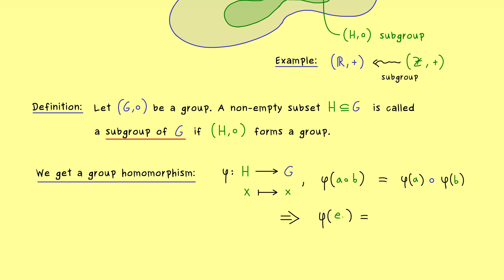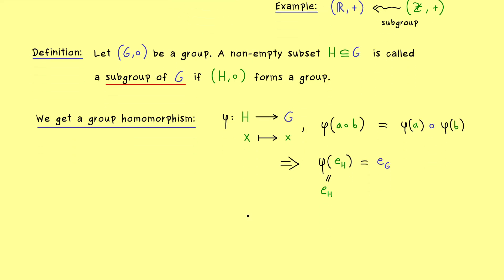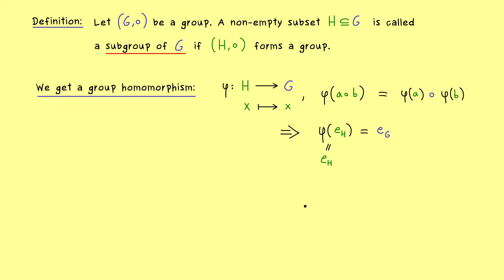Using general properties of group homomorphisms from the last video, we know the identity element is always sent to the identity element. So the neutral element e_H is sent to e_G. But since the map phi does nothing, we get that e_H equals e_G. In other words, we have proven that a subgroup must have the same neutral element as the larger group around it — every subgroup shares the same neutral element.